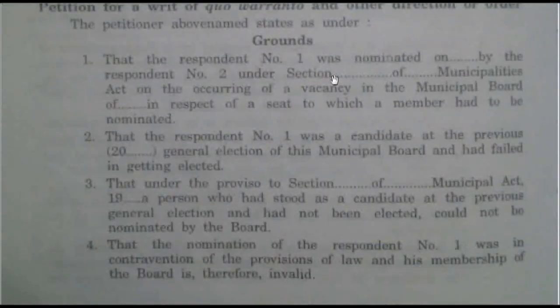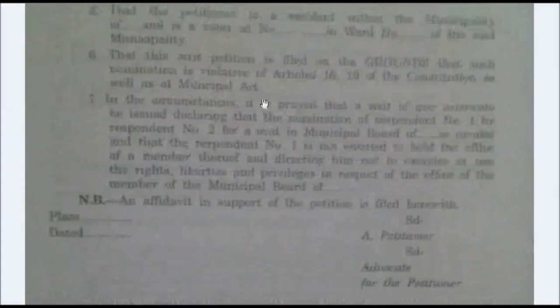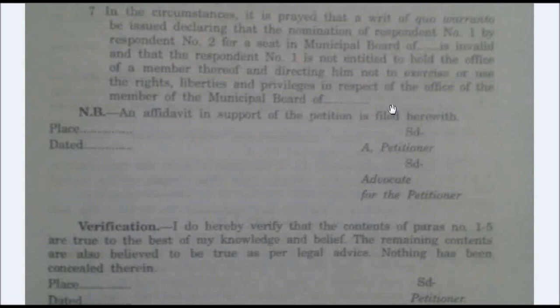This is just an example. In the grounds section, you have to cover each and every point: there is a person holding a post who is not capable of holding it and has no authority to do so. Other relevant points include that the person holding the post is violating any other law, any provision related to the Constitution, or any other act. You also have to pray for relief — that the court may issue the Writ of Quo Warranto, seize the power, or remove the person who is not capable of holding the post.